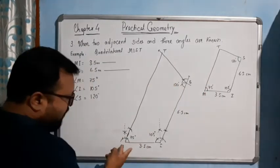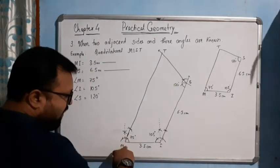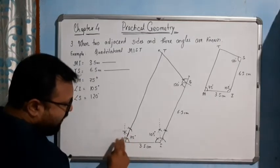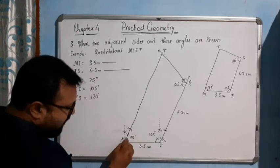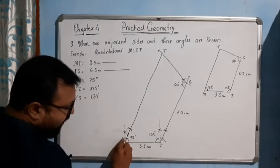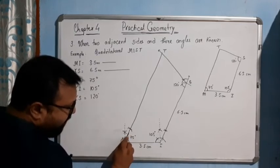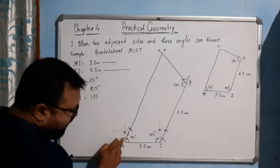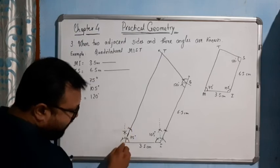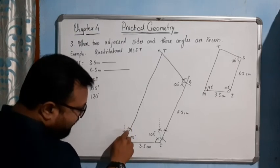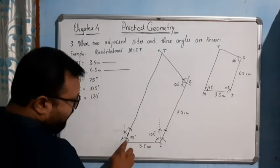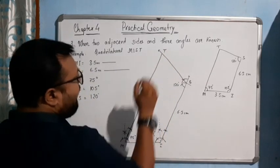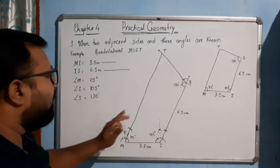From M, construct 75 degrees. First draw an arc, then another arc for 60 degrees, another arc for 60 degrees. Divide this to get 90 degrees — so this is 60 plus 30 degrees. Now divide the 30 into half to get 15 degrees. So 60 plus 15 gives 75. Place the pin and put another arc, then place the pin again and put another arc — this gives the intersecting point. Draw a straight line from M through this point to get 75 degrees. It will meet the ray from S at point T. So this is our required quadrilateral.